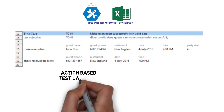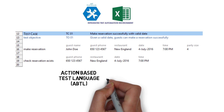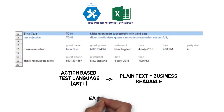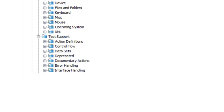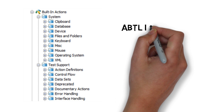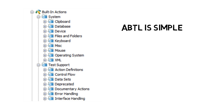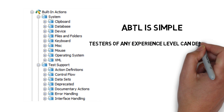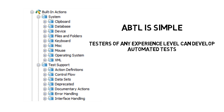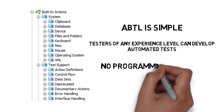Tests are created in a spreadsheet-like test editor using action-based test language — a plain text, business-readable language that anyone can understand. Action-based test language uses pre-built actions to keep things simple. With ABTL, testers of any experience level can develop automated tests. No programming is required.